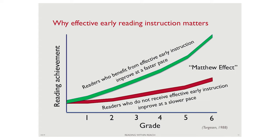I'd like to take about five minutes for a KWL chart activity. Before we get into the meat of the presentation, under the K, list the things you already know about early grade literacy — how children need to be taught and how skills should be implemented. Under the W, list what you want to get out of this presentation about early grade literacy skills and how children need to learn them.